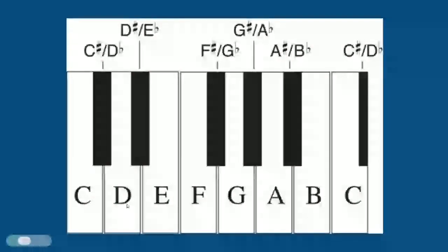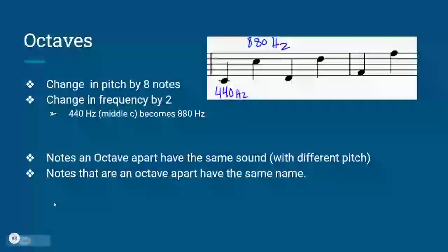The keys that are next to each other are a half step apart. The two most important intervals are the half step and the octave. An octave is a change in pitch by 8 notes, or a change in frequency by 2. For example, if a given note is 440 Hz, also known as middle C, then an octave up would be 880 Hz, and an octave down would be 220 Hz. Notes an octave apart sound the same, just higher or lower pitch. They also have the same letter name.